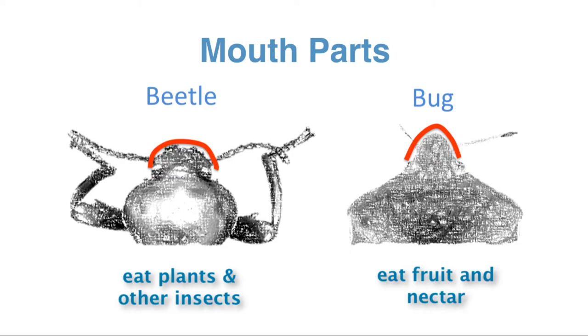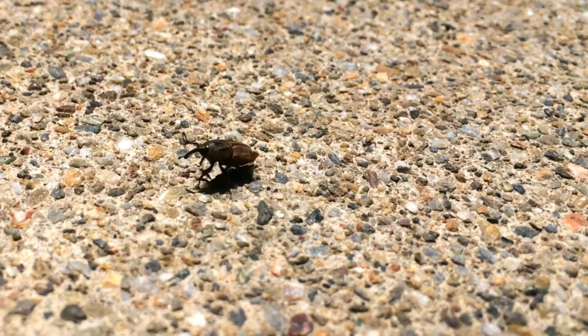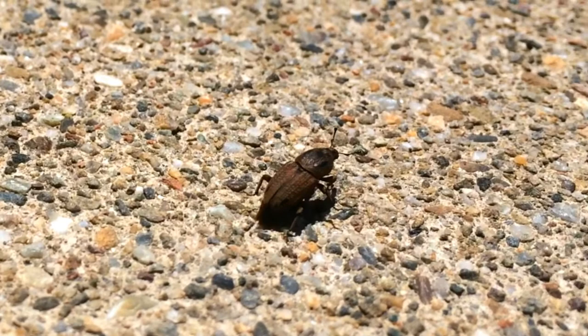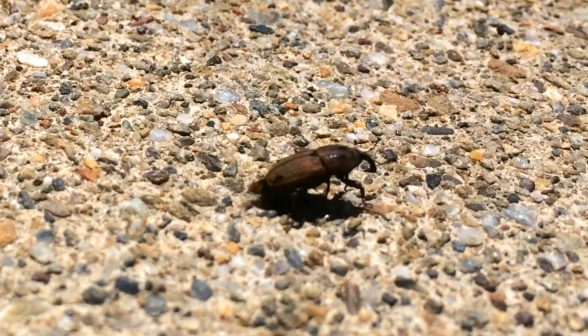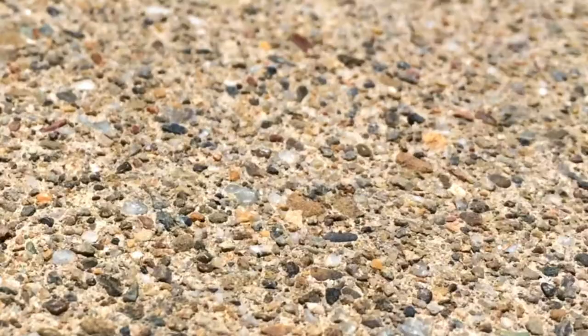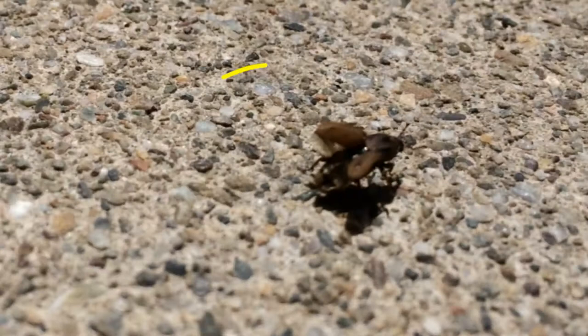Now if we look at the wings, bugs have wings with membranes that are slightly thicker than those of beetles. Beetles, on the other hand, have forewings modified to form hard, leathery coverings, which we call elytra. Hindwing membranes fold under the elytra when they're not flying.